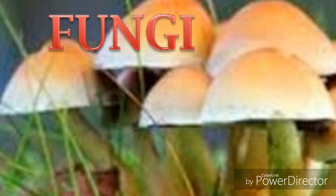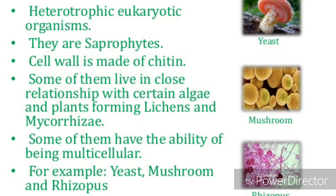The third kingdom in Whittaker's classification is Fungi. Fungi are heterotrophic and eukaryotic organisms. They are saprophytic in nature. Their cell wall is made up of chitin. Some of them live in close relationship with certain algae, and these are called lichens. Some fungi have the ability to be multicellular.